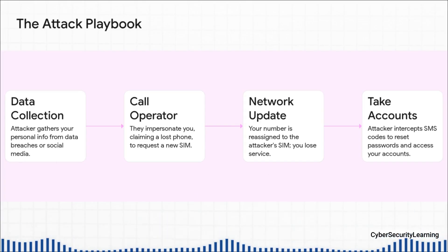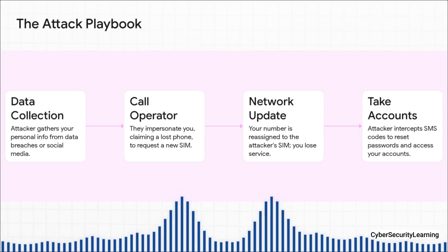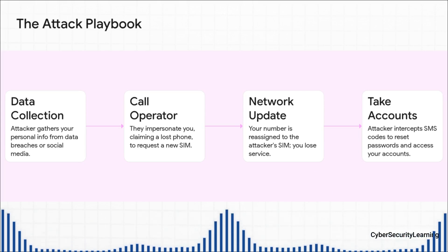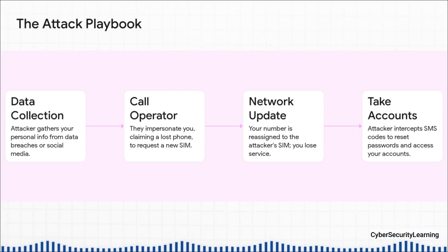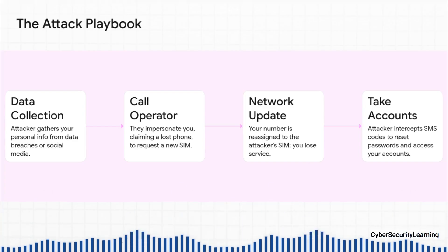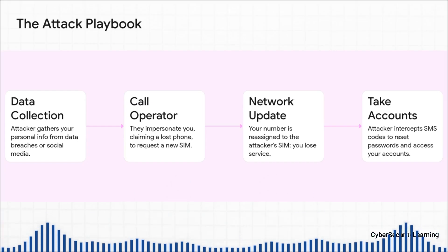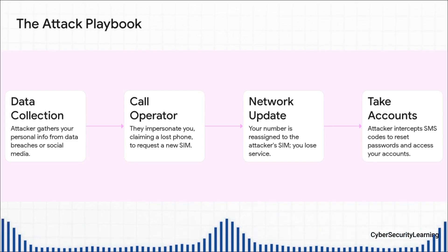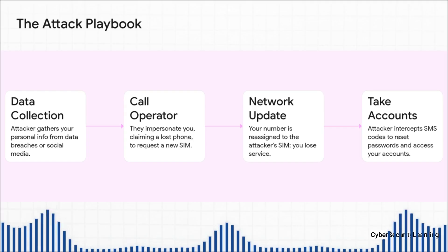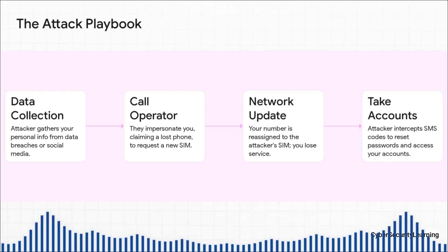Step two: operator contact. Armed with your info, they call your mobile provider with a sob story ready — 'I lost my phone' or 'my SIM card broke, I need to activate this new one.' If they're convincing, step three is the network takeover: the employee flips the switch, your phone loses service, and the attacker's phone comes alive. And finally, step four — account compromise. They immediately start hitting 'forgot password' on all your important accounts, grabbing the text messages, and locking you out of your own digital life.